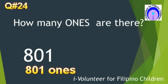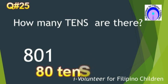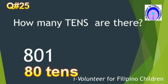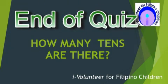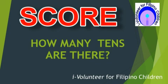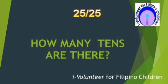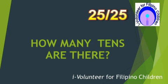Number 25. How many tens are there? There are 80 tens. Congratulations! This is the end of the quiz. Count all your correct answers and write down your score on the upper right hand corner of your answer sheet. The perfect score will be 25 over 25. Congratulations!